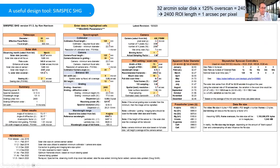Ken Harrison also made this very nice spreadsheet called SimSpec, which I helped him with recently. It gives you an idea of the image scale - if you know your telescope you want to use, you can work out what sort of optics you want in terms of magnifying or de-magnifying your slit. It also tells you how many frames you need, how fast you need to scan, and so on. It helps you figure out a lot of the parameters when you're first starting out - assuming you want around one or two arc seconds per pixel.